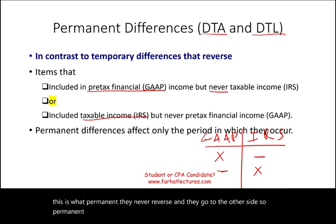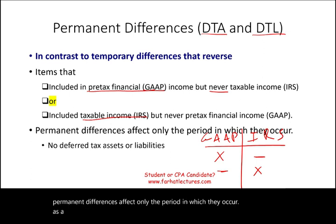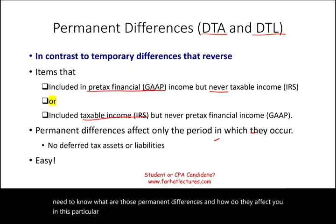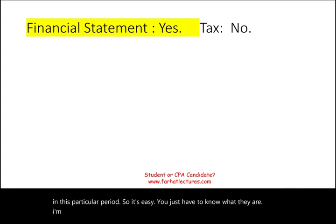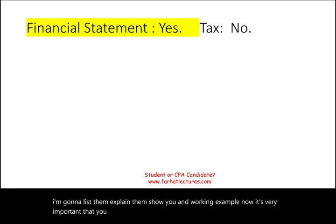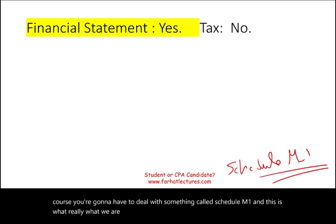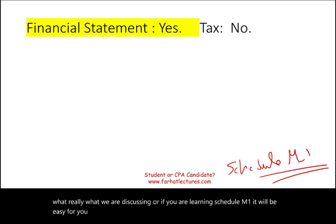Permanent differences affect only the period in which they occur. As a result, there is no deferred tax asset or liability created. You need to know what permanent differences are and how they affect you in a particular period. It's also important to understand these for Schedule M1 in your income tax course.